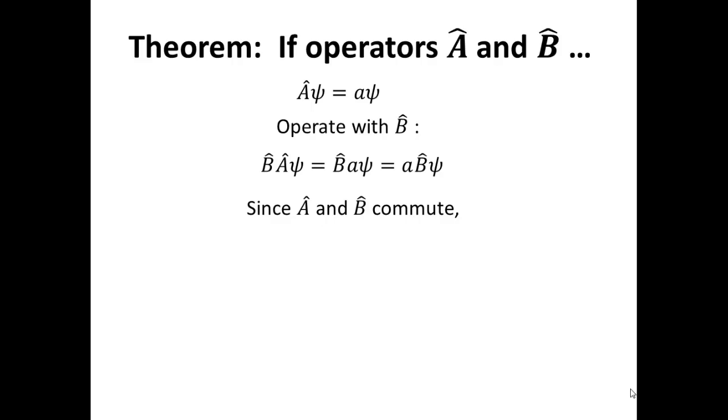Since we're looking at the case where A and B are known to commute with each other, what that means is that we can reverse the order of operation for our left-hand side term. In the third line we've reversed it so that B operates on psi first, followed by A operating on that particular result.